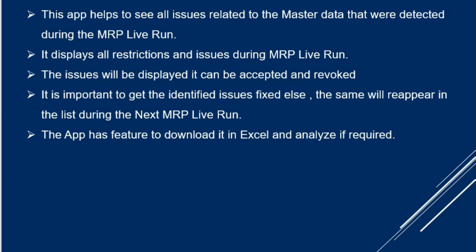As a small intro, this app helps to identify issues related to master data — very specific to master data only. Whatever has been captured will be shown in the output. It displays all the restrictions, meaning all the issues which are part of the MRP live run. It also has a feature where, if you are a planner and have identified issues, you can either accept or revoke them. That accept and revoke functionality is also provided here.